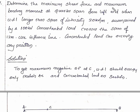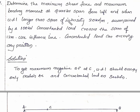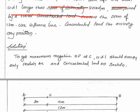This is a simply supported beam with length 12 meters. Calculate maximum shear force and maximum bending moment at quarter span from left support. Quarter span equals 1/4 of 12 meters, which is 3 meters from the left support.